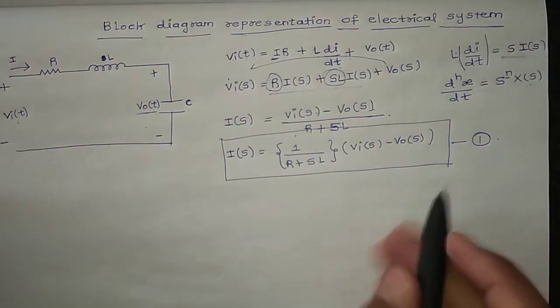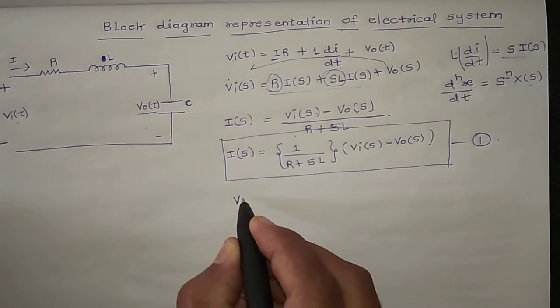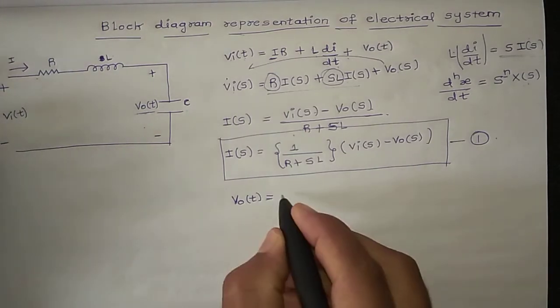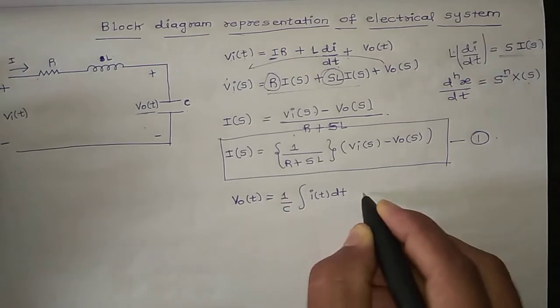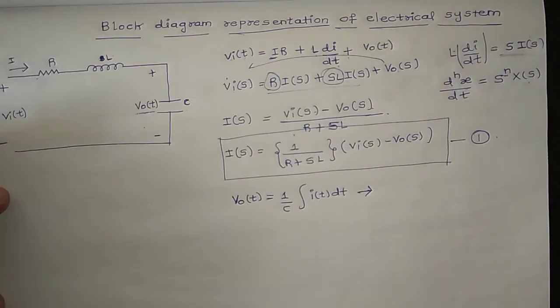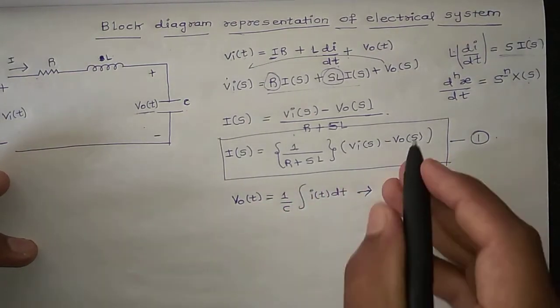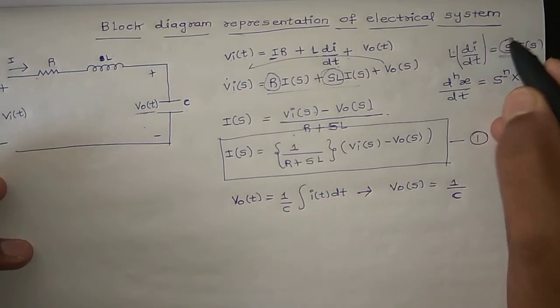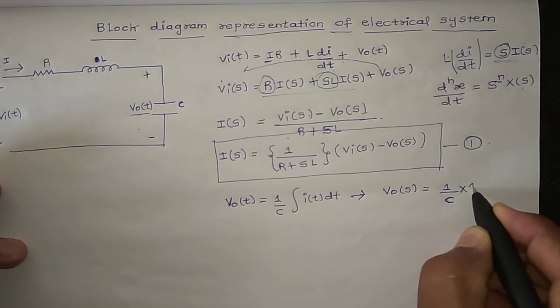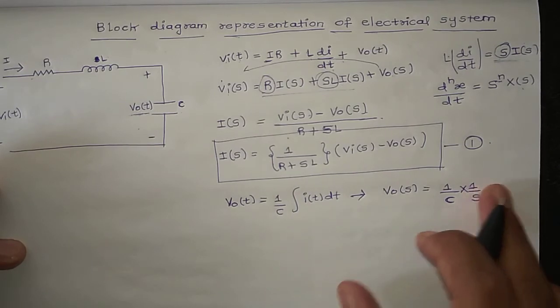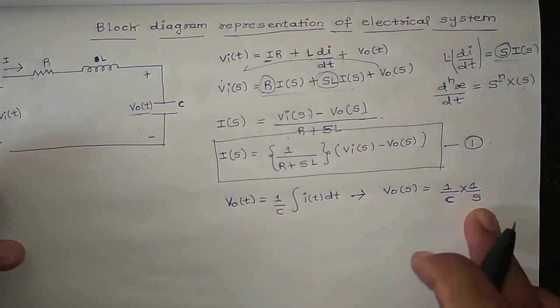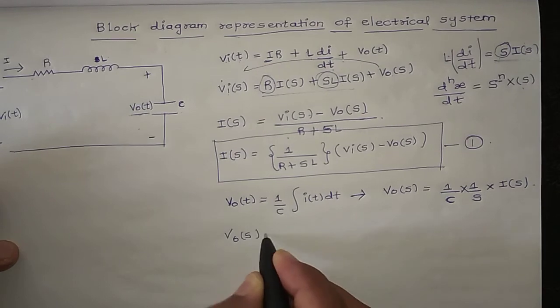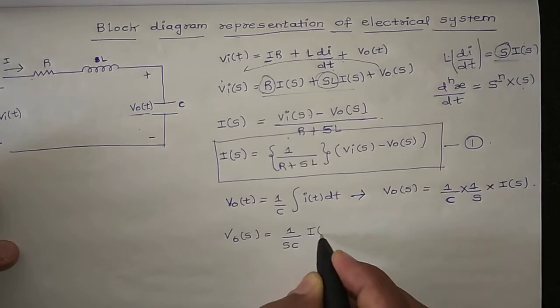And also I have Vout(t) is voltage across capacitor. So Vout(t) equals, the formula for voltage across capacitor is 1/C integral of i(t)dt. Then if both sides Laplace transform, we get Vout(s) equals 1/C. Here differentiation is s to multiply, integration is inverse, 1/s. Here single time integration, 1 by s, 1 by s into i(s). Now we got second equation, Vout(s) equals 1/(sC) i(s). So two equations are written. I think two equations are more than enough to find the block diagram.